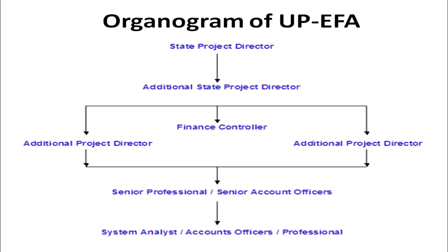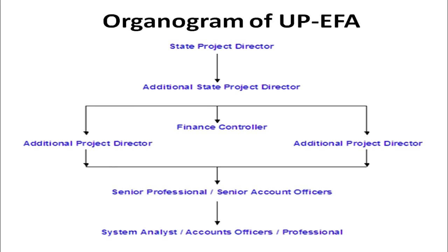This basic education project is implemented through an organizational structure at the state level. At the topmost level, there is a State Project Director for the basic education project in Uttar Pradesh. The State Project Director is assisted by an Additional State Project Director, under whom two Additional Project Directors and a Finance Controller work. Senior professionals, senior account officers, system analysts, and account officers work under them to improve the status of elementary education.